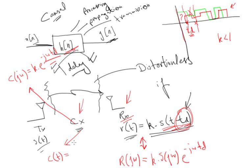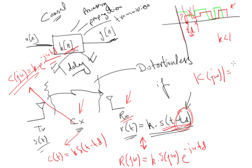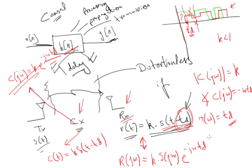Taking the Fourier transform — since r of t is continuous, we use the continuous-time Fourier transform — we get r of jω equals k times S of jω times e raised to power minus jω·td. From here the channel frequency response C of jω equals k times e raised to power minus jω·td, and in time domain c of t equals k times δ(t − td).